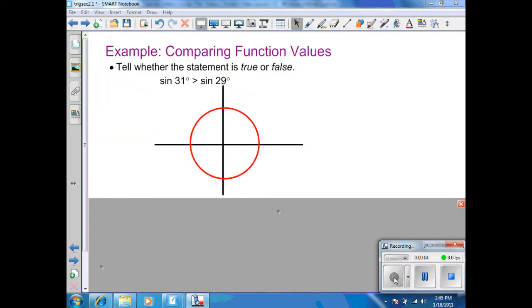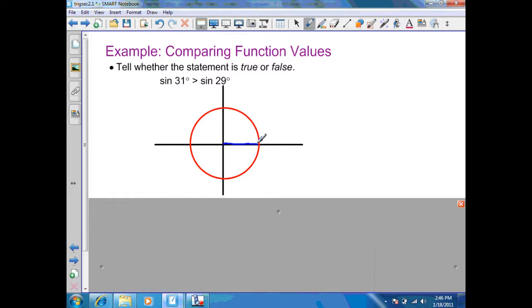Our next example wants us to compare function values. Tell whether the statement is true or false. Sine of 31 degrees is greater than the sine of 29 degrees. The easiest way to look at this is a circle that has been generated inside of a coordinate plane. Now let's draw a right triangle inside that circle and identify the sine function. So an initial side on my x and an r value for my hypotenuse, and I drop a vertical. Here, my initial side is going to be my x value. My terminal side is my r value. And of course, the vertical I dropped is my y. And we know from previous sections that the sine function is the y over the r. Now let's draw a couple more triangles and see what happens to my y as my angle gets bigger. As I draw another terminal side, and drop a vertical, my y value is growing as my angle grows.